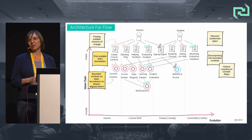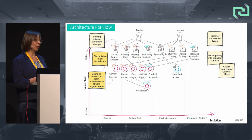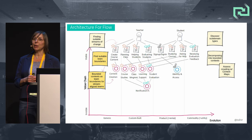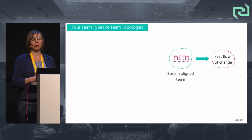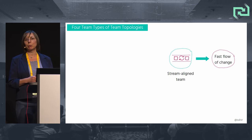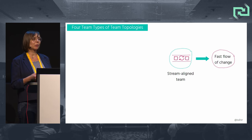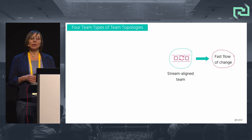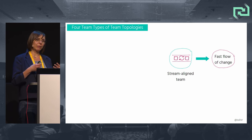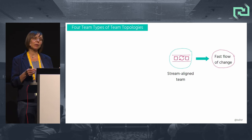As mentioned earlier, bounded contexts serve as well-defined ownership boundaries, making them also good candidates for team boundaries — specifically for stream-aligned teams. Stream-aligned teams were introduced by Matthew Skelton and Manuel Pais in their book Team Topologies, published in 2019. Stream-aligned teams are autonomous, cross-functional teams aligned to a continuous stream of work, focusing on a fast flow of changes to produce a steady flow of feature deliveries.